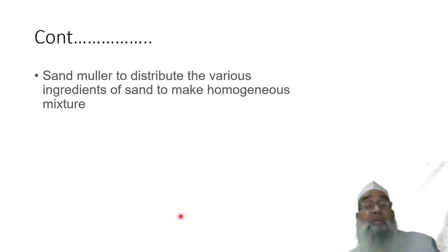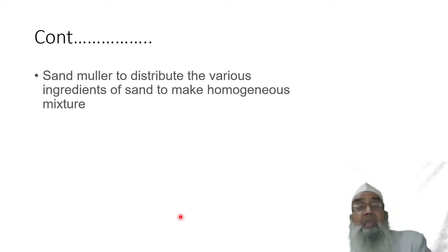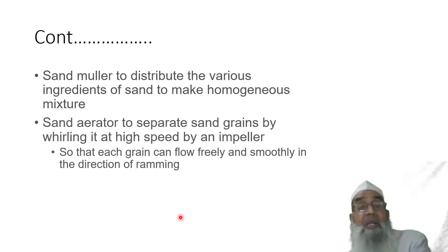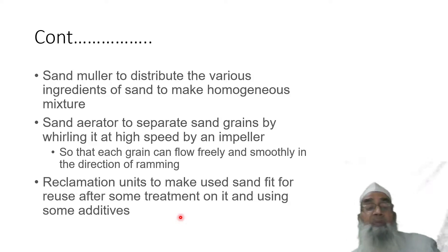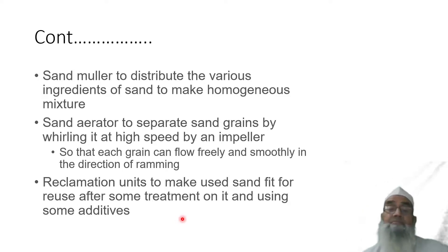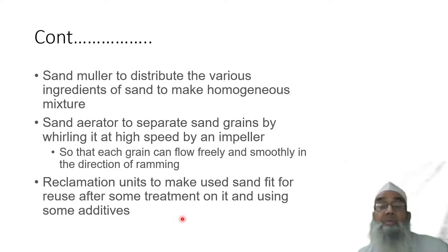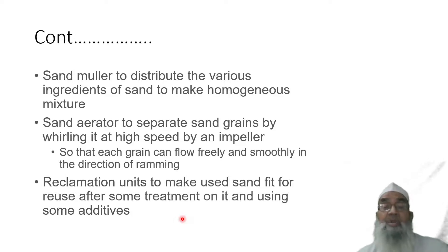Sand mullers are employed to distribute various ingredients to make the mixture homogeneous. Sand aerators separate sand grains by drilling at high speed by an impeller so that each grain can flow freely and smoothly in the direction of ramming. A reclamation unit is used so that sand can be made fit for reuse after treatment using some additives.